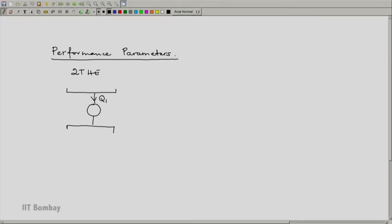We have the heat supply Q1, the heat rejected Q2, and the work output W. The two temperatures T1 and T2 are such that T1 is greater than T2.